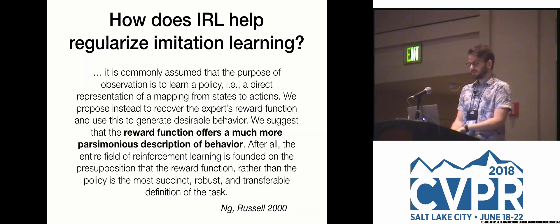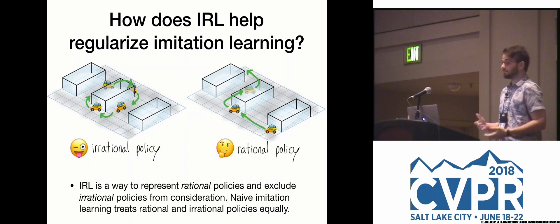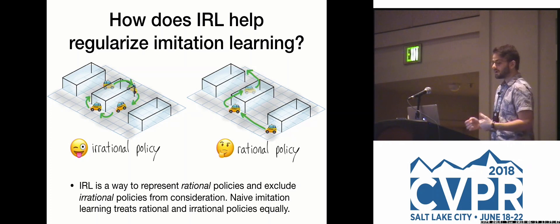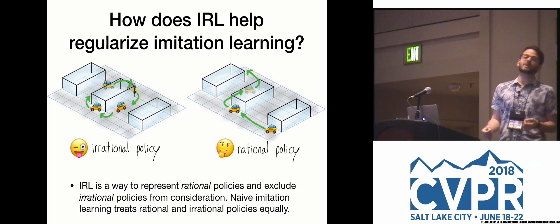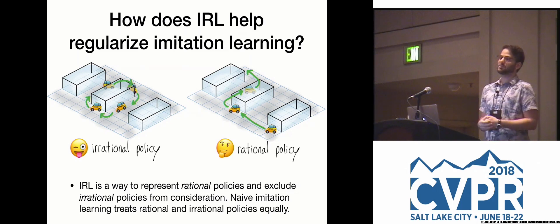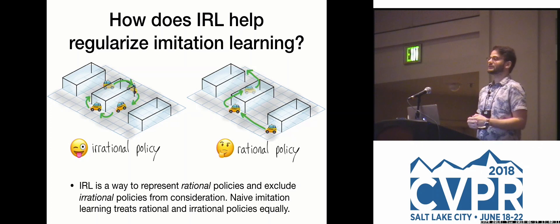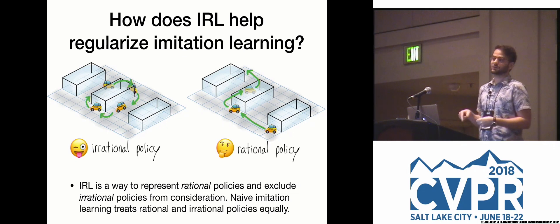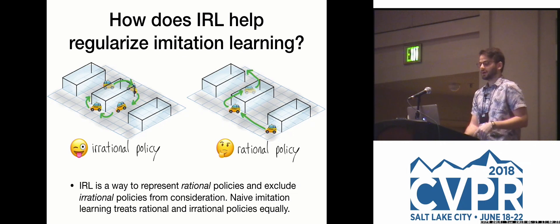Consider a taxi observed in many scenarios that has a bias to make right turns. If you're just learning a policy naively, it might behave irrationally — preferring to take right turns and circle the block. But that's not what we want to imitate; we want to imitate rational behavior. IRL is a way to represent policies and exclude irrational ones: if we understand the rewards of various behaviors, a trajectory that circles the block won't have high cumulative reward. IRL can be thought of as an inductive bias — specifically, imposing rationality on the space of possible behaviors.